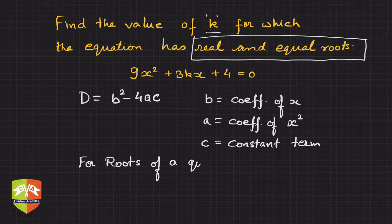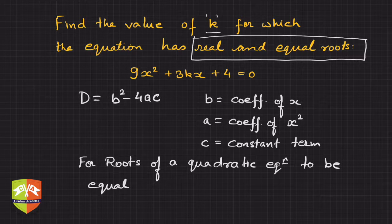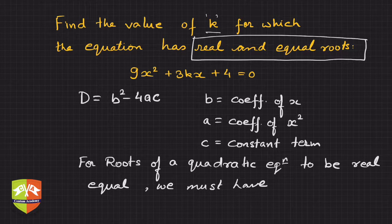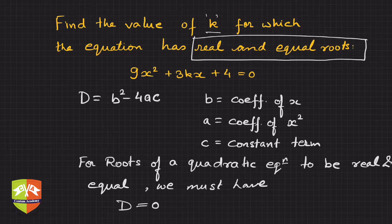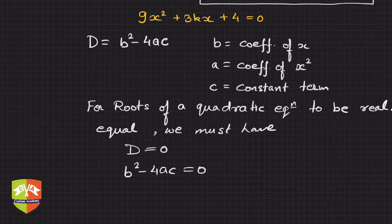For roots of a quadratic equation to be real and equal, we must have D equal to zero — that is, b squared minus 4ac must be equal to zero. Now let us deploy the values. If you notice carefully, b is 3k, c is 4, and a is 9.